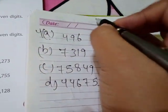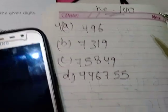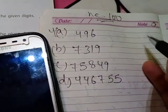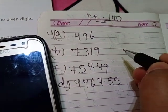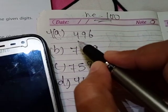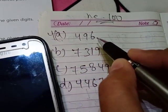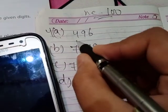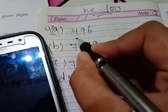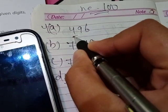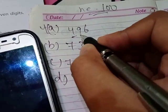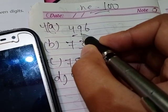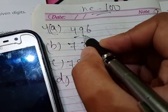We have to round off to the nearest hundred — pay attention very carefully. Whenever we have to round off to the nearest hundred, we come to the hundreds place first. This is the hundreds place. To round off this hundreds place, we see the digit which is given after it. Here it is 9. Is 9 less or more than 5?